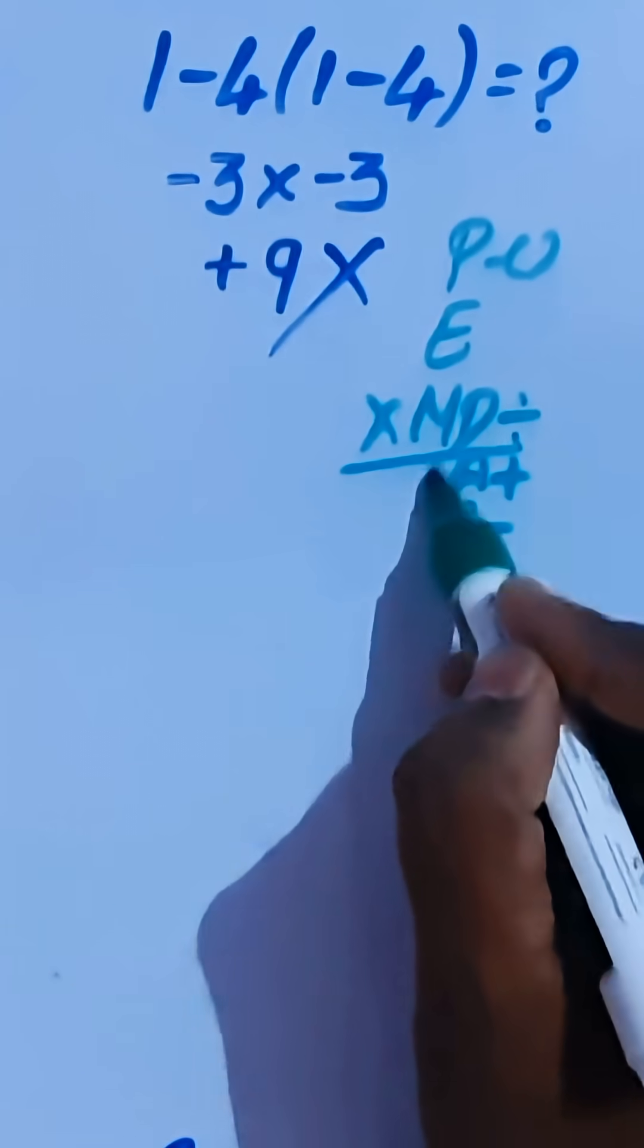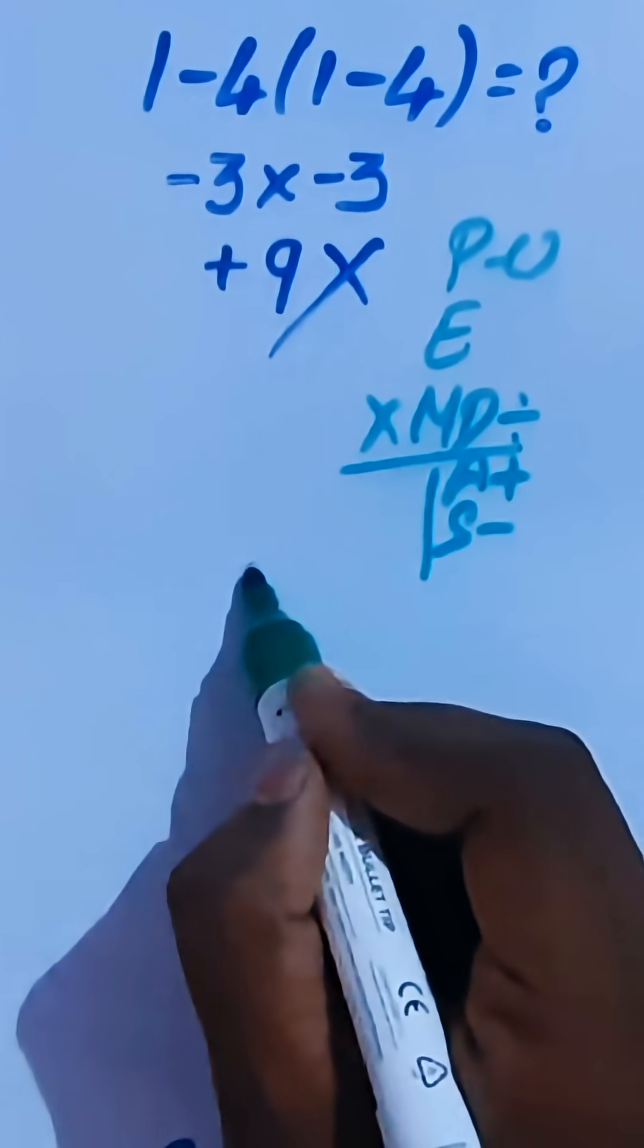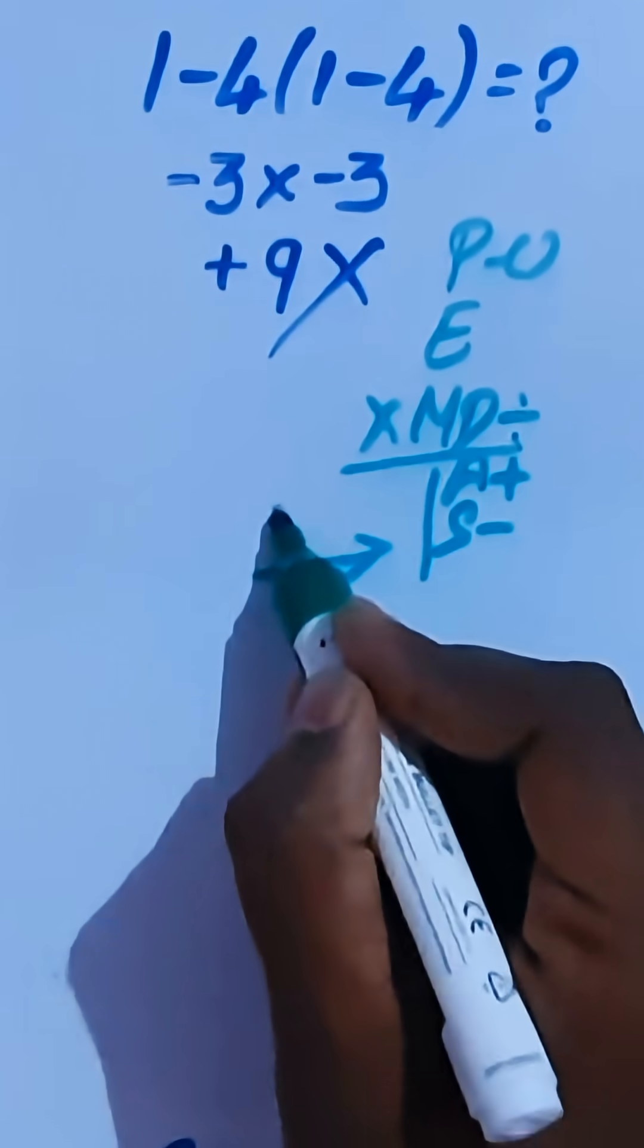Here multiplication and division are equal priority. Also, this addition and subtraction are equal priority. For this equal priority, we are going to introduce another rule called left to right.